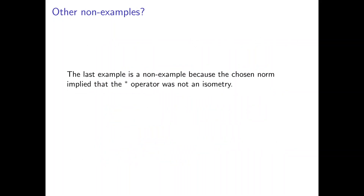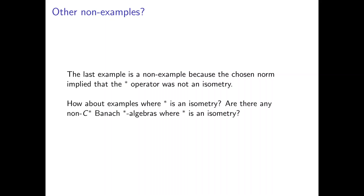Let's consider some other kinds of non-examples. In the last example, the C-star condition failed because the star operator was not even an isometry. But what about cases where it is? Are there any non-C-star Banach star algebras where the star operator is an isometry? The answer is yes — in fact, there are many of them.